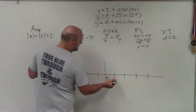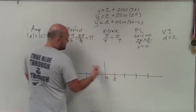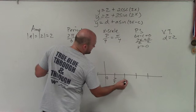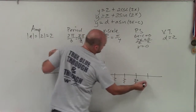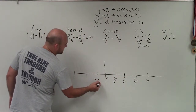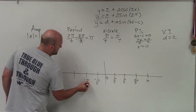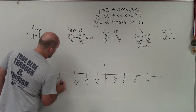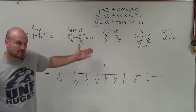Going a period to the right and a period in the negative direction, I can simply copy the exact x scale just in the negative form. You can see it takes 4 x scales to create a period.